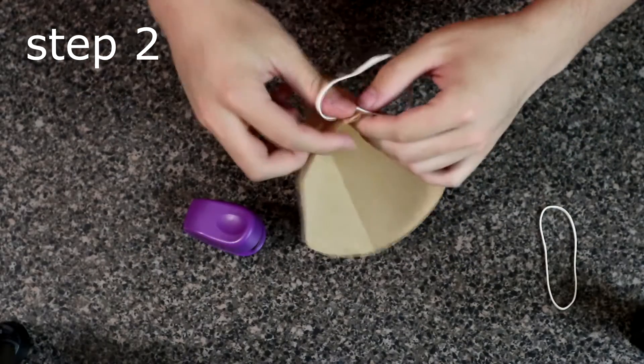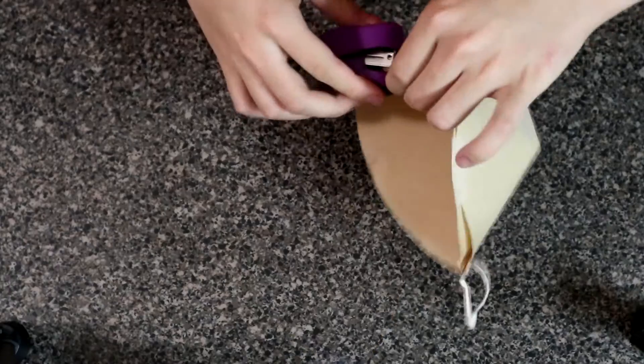Then, you're going to staple the two rubber bands on each side of the coffee filter, so it looks like this.